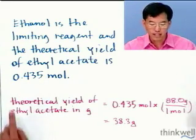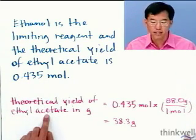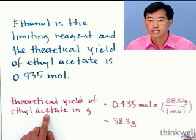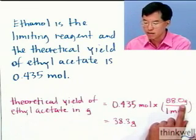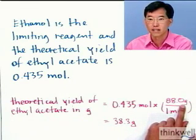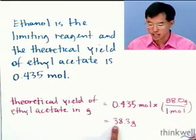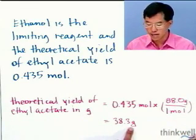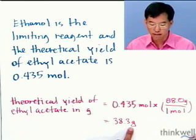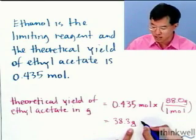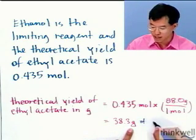If you want the theoretical yield of ethyl acetate in grams, multiply by the molar mass of ethyl acetate, and that gives us 38.3 grams of ethyl acetate.